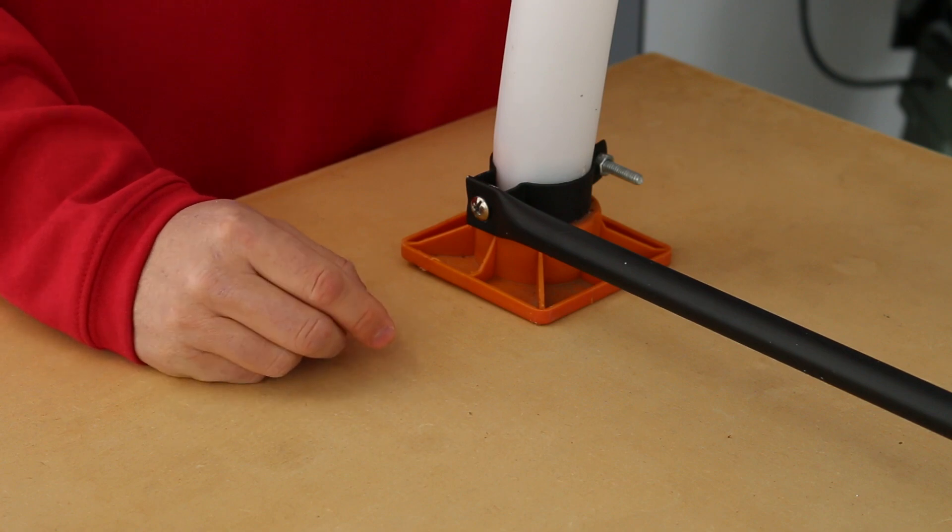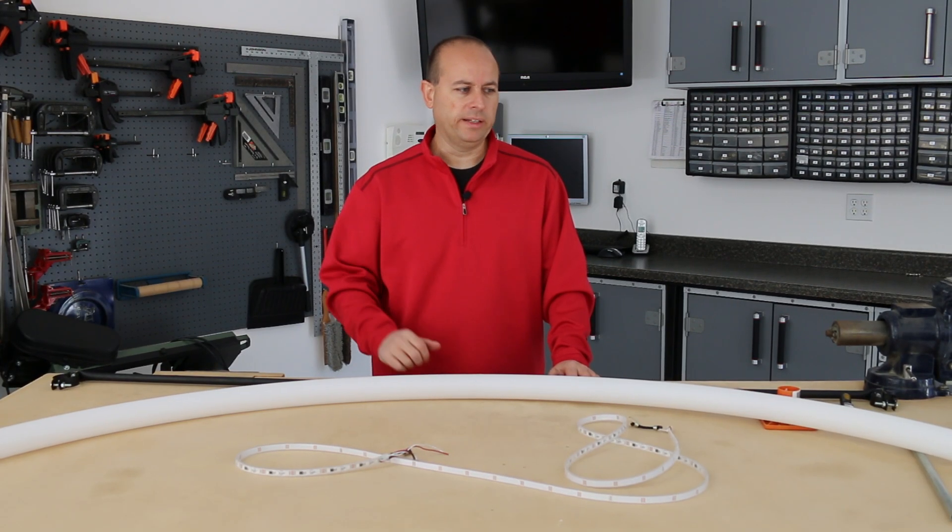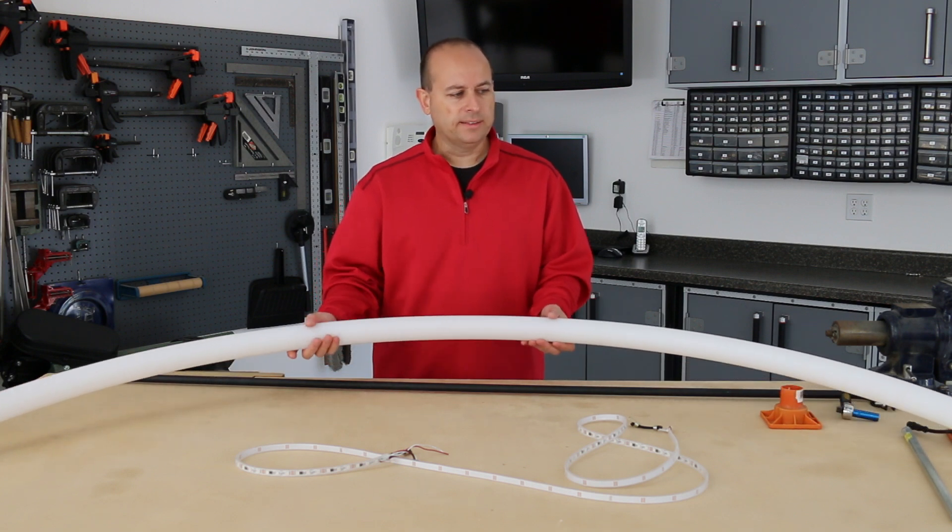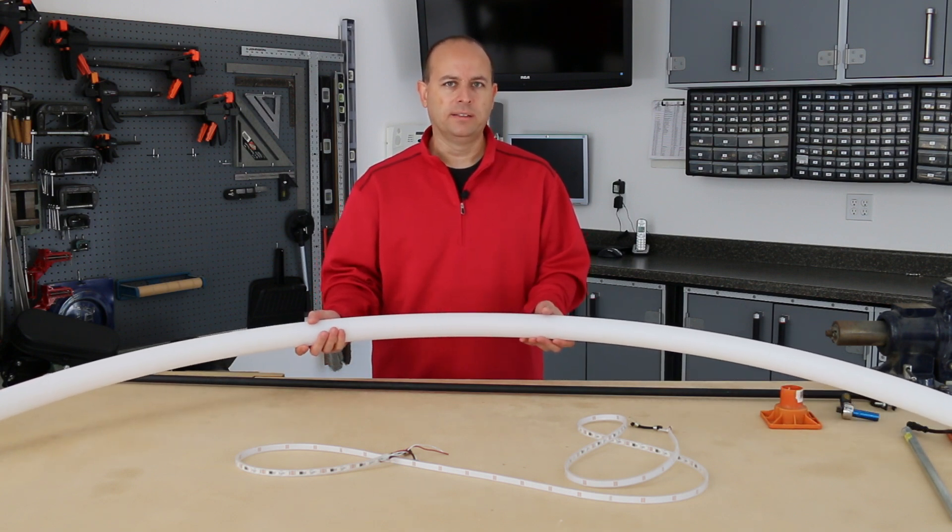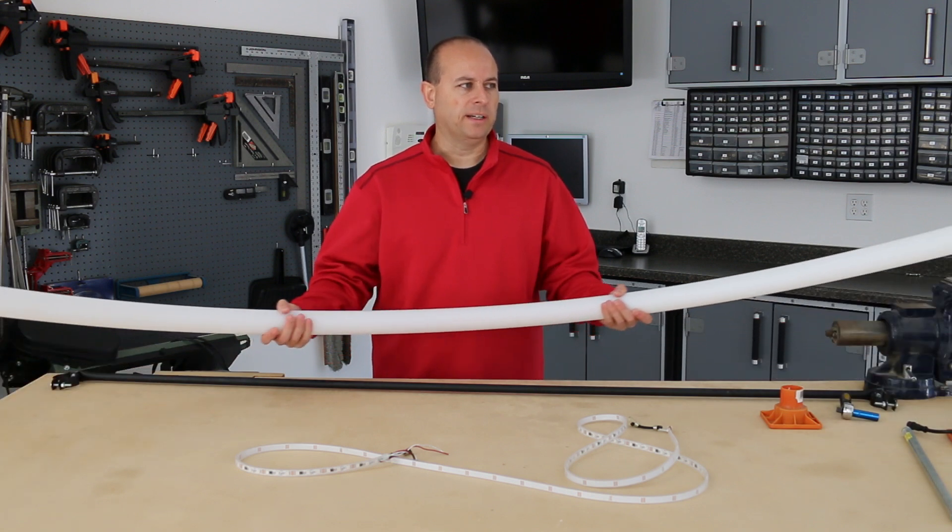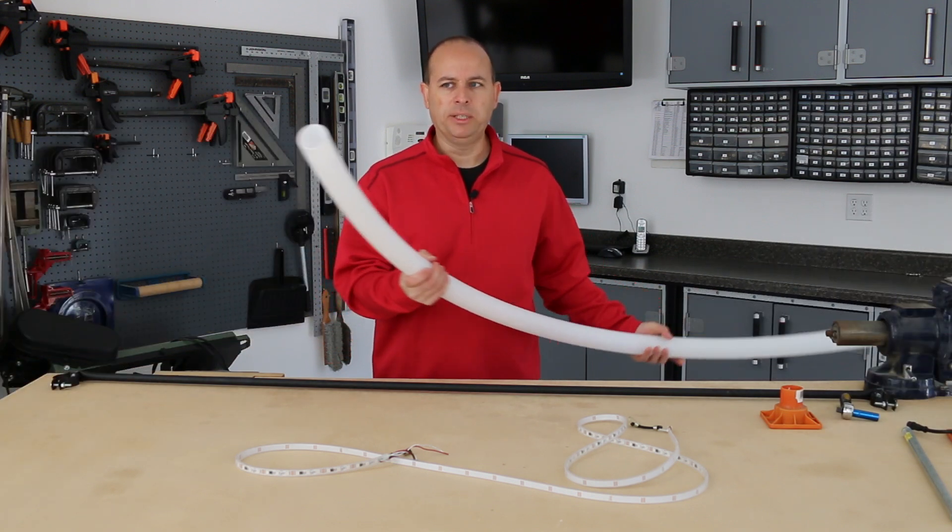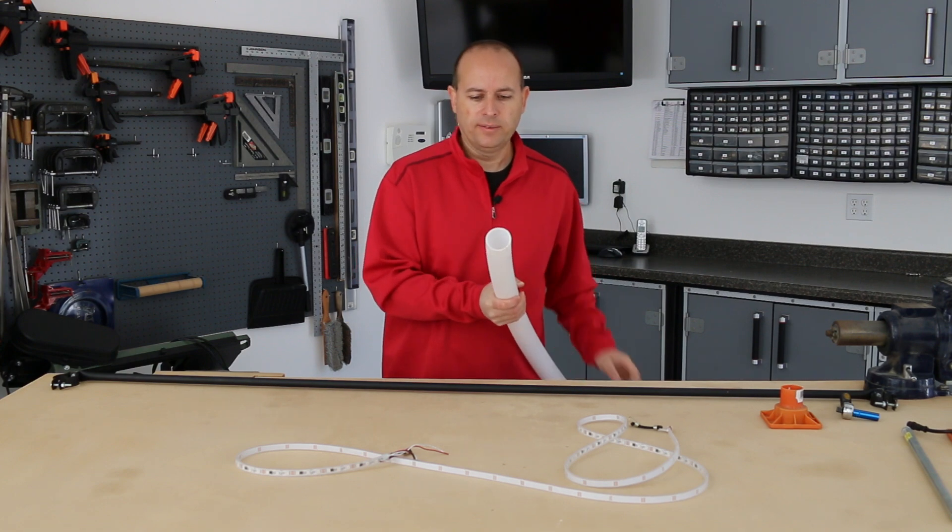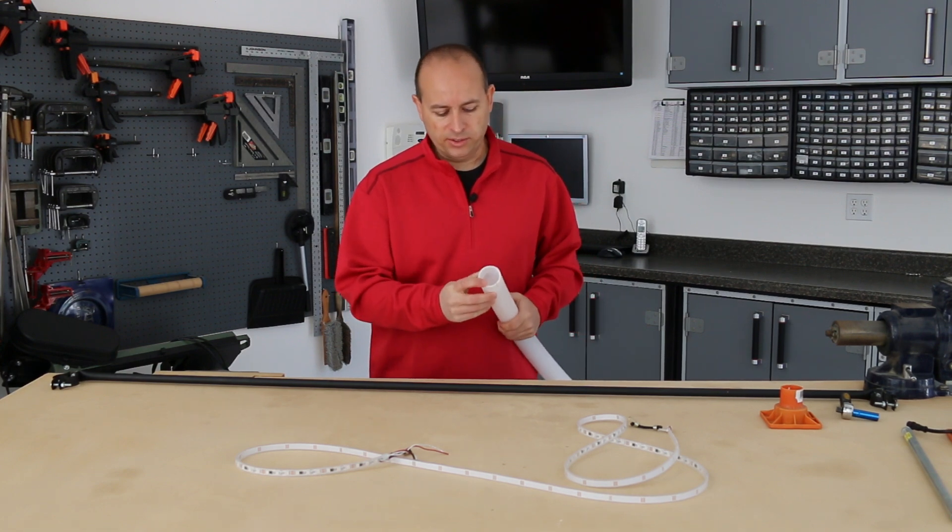The first step in creating the arch is cutting the tubing to the correct length. This is cut to just over nine feet. I used nine feet based on the size that I wanted it to be, and you can make it whatever size you want for your yard.